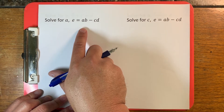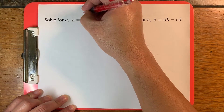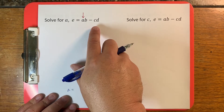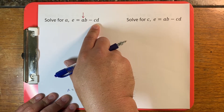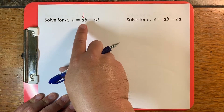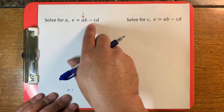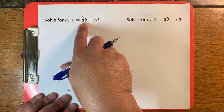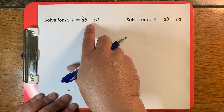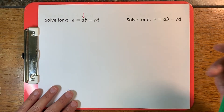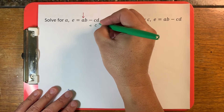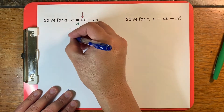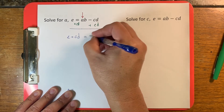In this problem, I want to isolate the a, so my final answer should look like a is equal to something. The first thing I want to do is get rid of the c and the d. Think of this as reverse PEMDAS — in PEMDAS we do multiplication before subtraction, but when isolating we do subtraction before multiplication. So I want to get rid of the cd by adding it to both sides, and I get e plus cd is equal to ab.